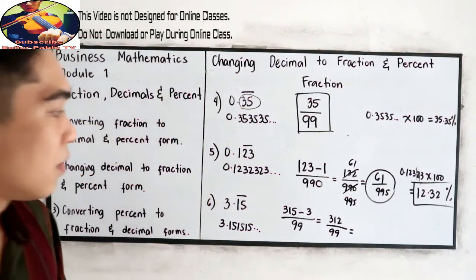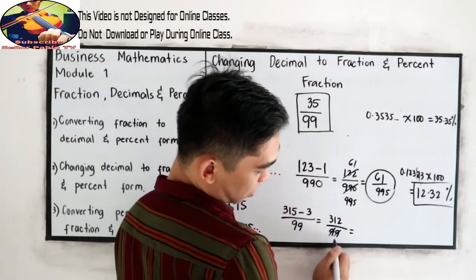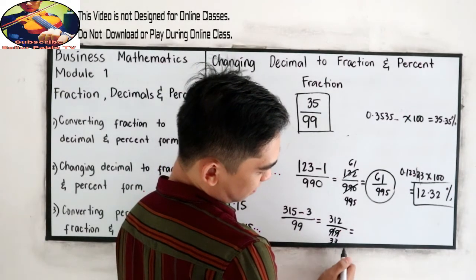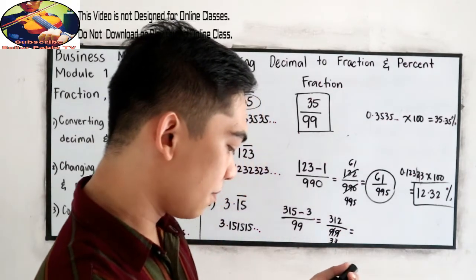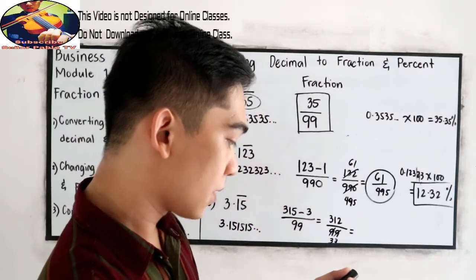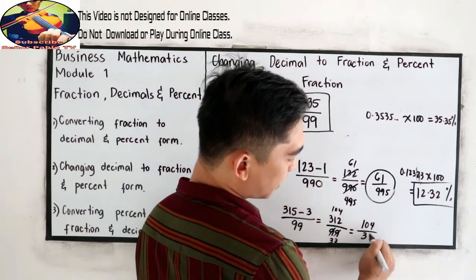Now, reduce in lowest term. Divisible by 3. So this is 33. And 312 divided by 3, 104. So 104 over 33.